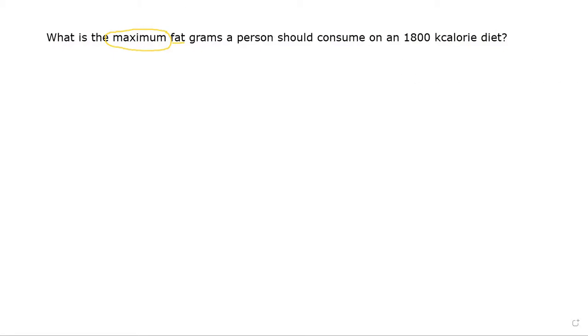Well let's start with it is fat. So we would use the AMDR which is the acceptable macronutrient distribution range. We know that carbohydrates are supposed to be 45 to 65 percent of the calories. Protein is supposed to be 10 to 35 percent of the calories. And fat should be 20 to 35 percent of the calories.